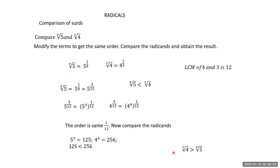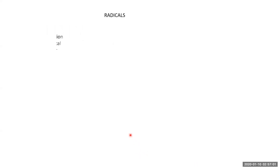Therefore the cube root of 4 is greater than the fourth root of 5, or equivalently, the fourth root of 5 is less than the cube root of 4. That completes the comparison of surds.